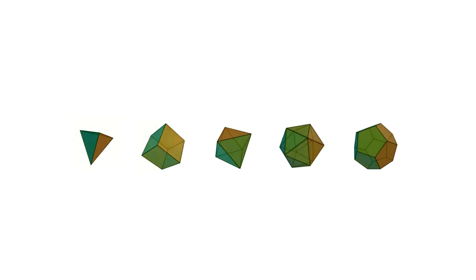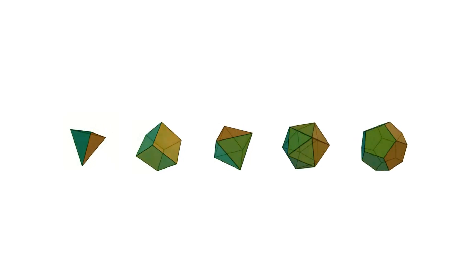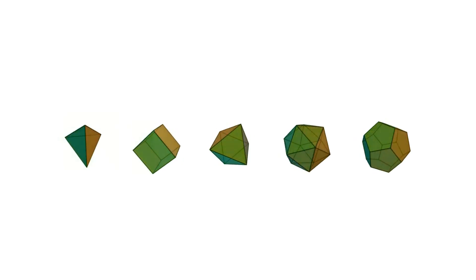A platonic solid is a 3D shape where each face is the same regular polygon and the same number of polygons meet at each corner.